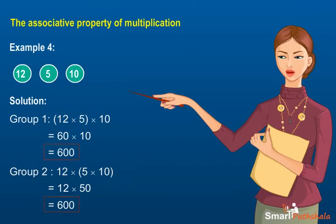As in both the groups the product is the same, we can say that multiplication is associative for whole numbers.